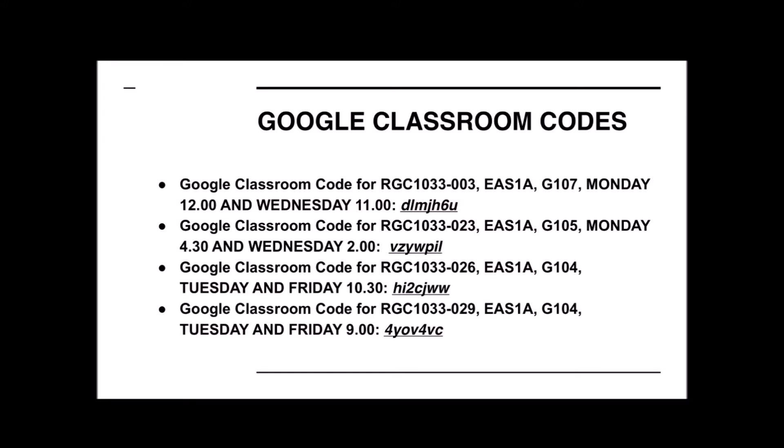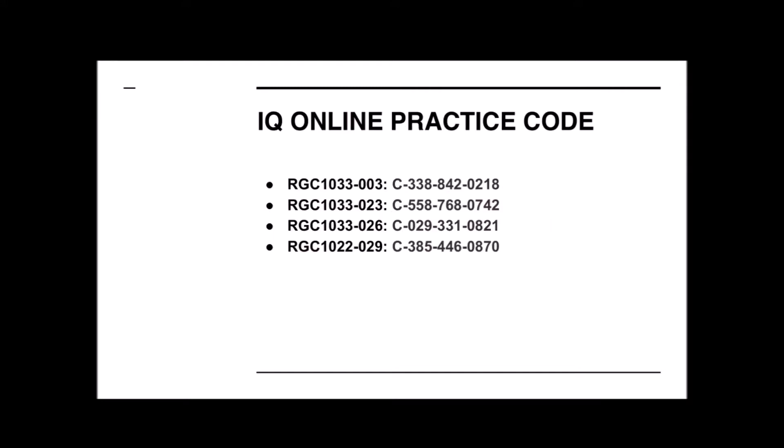If you go onto the website, it should give you instructions about how to sign up for the class. Also make sure you get signed on to the IQ Online practice. You can find it at the front of your book, the first two pages. Follow the instructions there and sign up for my class — you can see on this slide the class codes. Please make sure you join the right class because I'll need to check whether you've done the work I've assigned through this website.